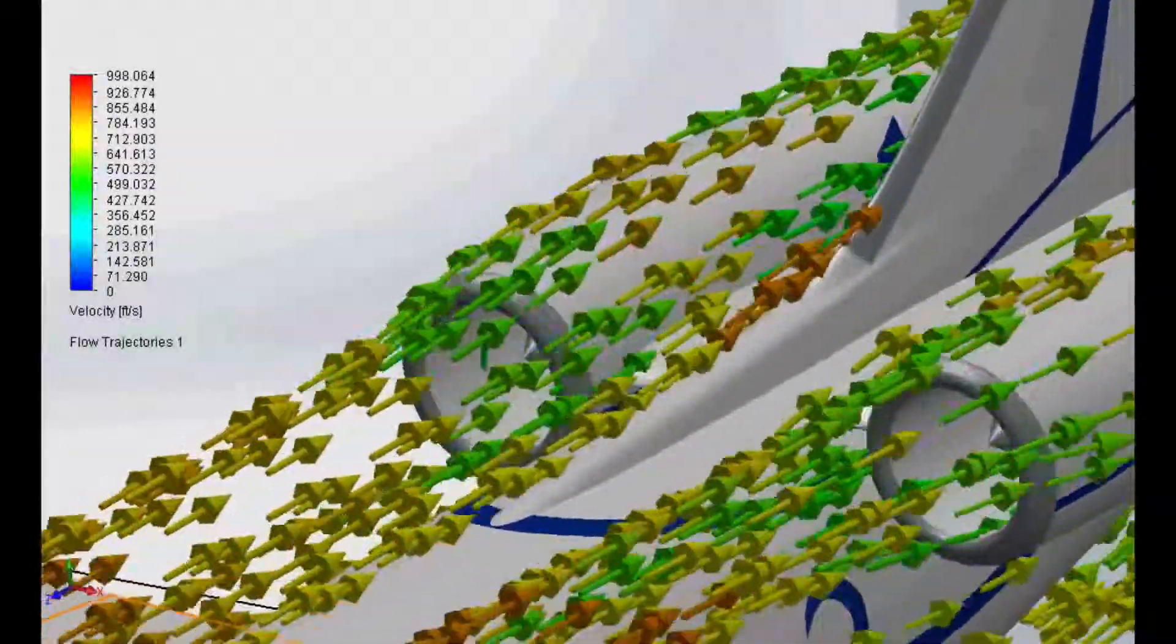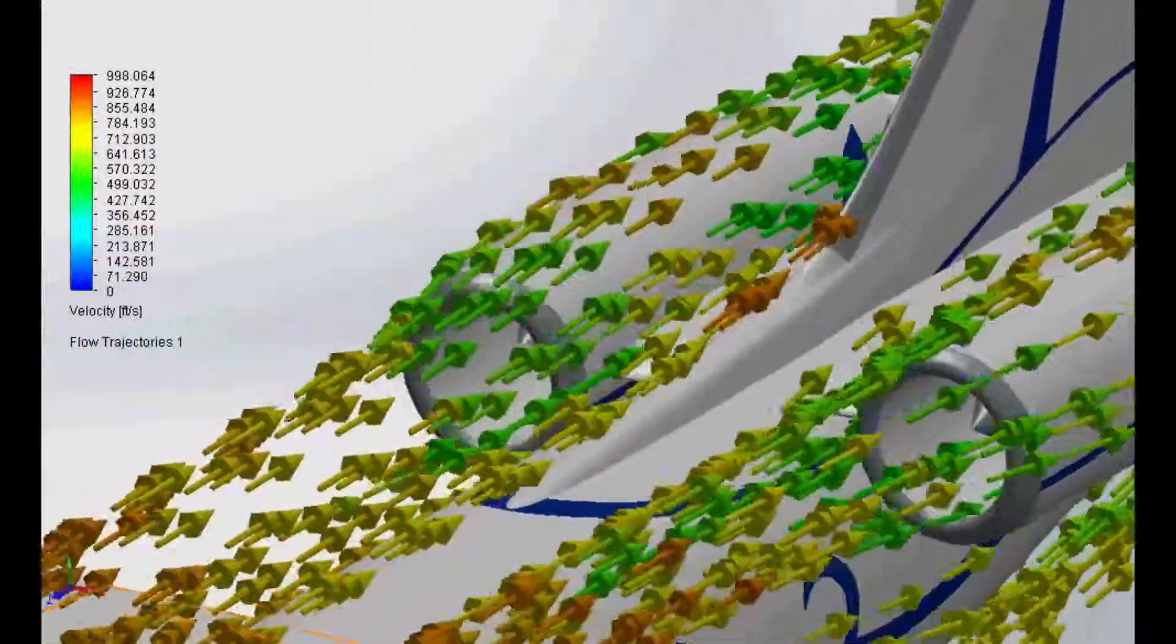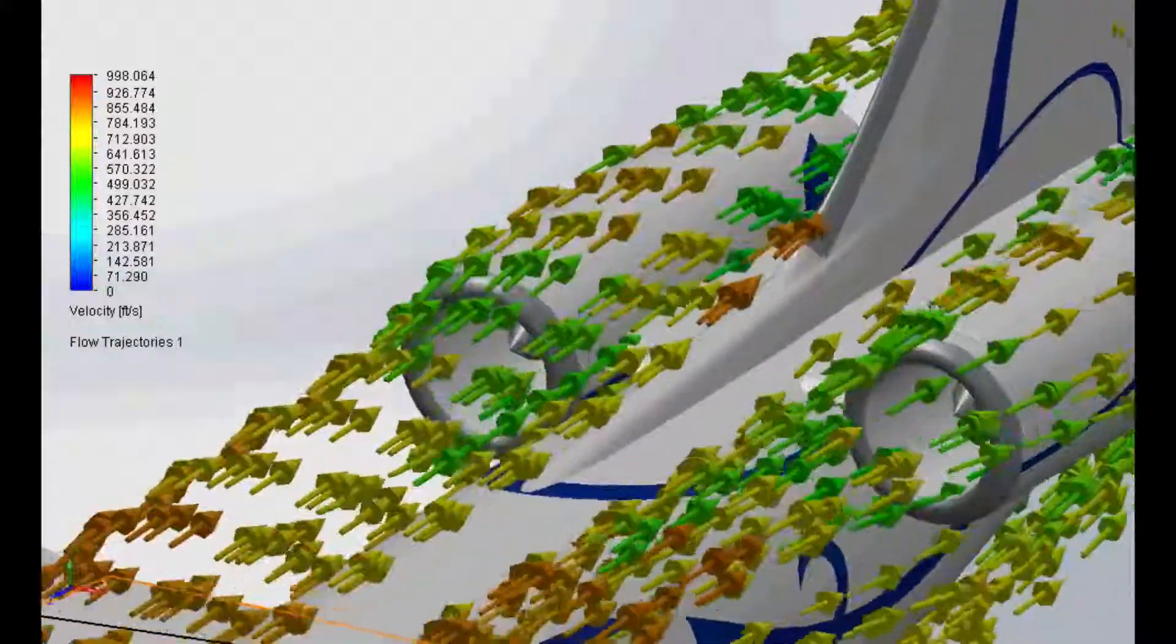As you can tell, the green is of much lower velocity than the orange that is the freestream.